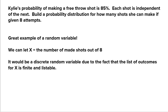Here's the example. Kylie's probability of making a free throw shot is 85%. Initially it looks like any old probability question. We know that she has an 85% chance to make a free throw and a 15% chance that she misses it. We're also told that each shot is independent of the next. It asks us to build a probability distribution for how many shots she can make if she's given eight attempts.